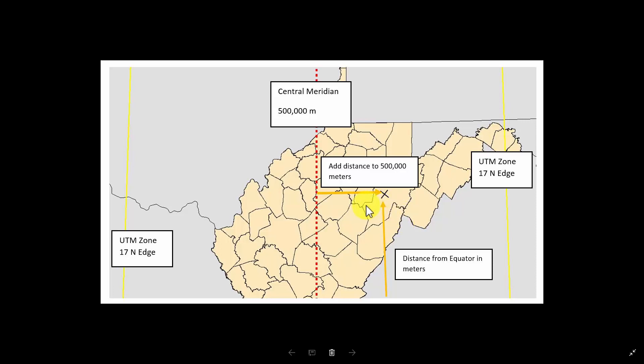Similar to longitude, the easting measures position in the east-west direction, also using length units. The distance is relative to the central meridian, or centerline, in each zone.